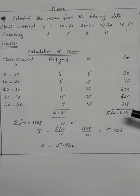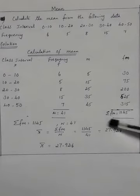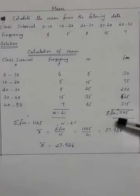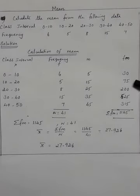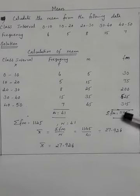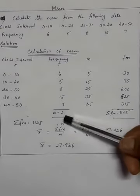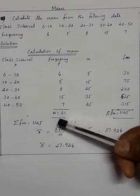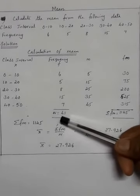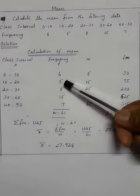Now I calculate sigma FM. Sigma FM equals 30 plus 75 plus 200 plus 525 plus 315 equals 1145. Next we calculate N. N equals total frequency: 6 plus 5 plus 8 plus 15 plus 7 equals 41.